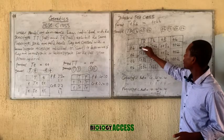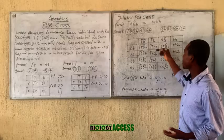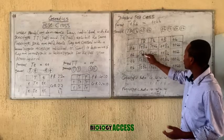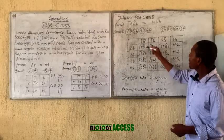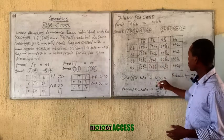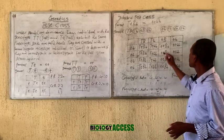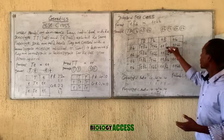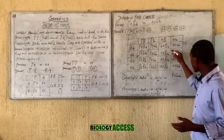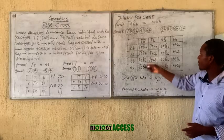In each box of the Punnett square, you place the gametes accordingly — you can check my video on how to carry out crossing for full details. You realize you get four phenotypes: tall and large in size, tall and small in size, short and large (shrubby or fat), and short and small in size. Each phenotype appears four times, giving a phenotypic ratio of four ratio four ratio four ratio four, which simplifies to one ratio one ratio one ratio one. The genotypic ratio follows the same pattern.